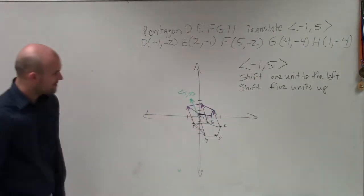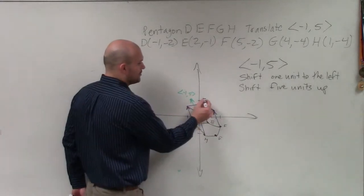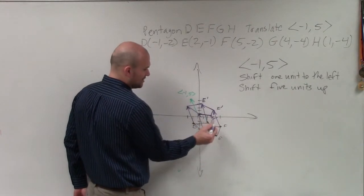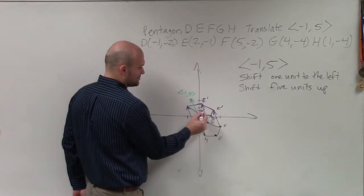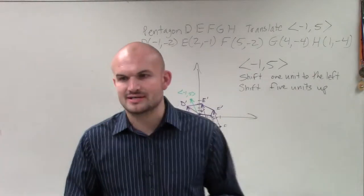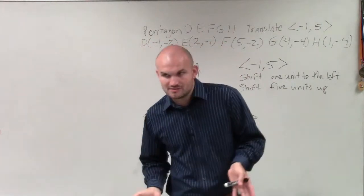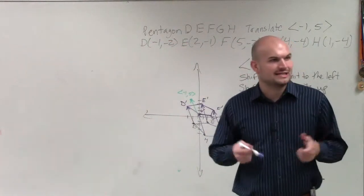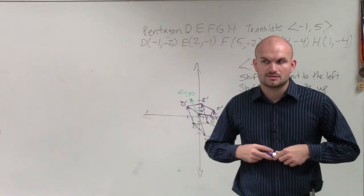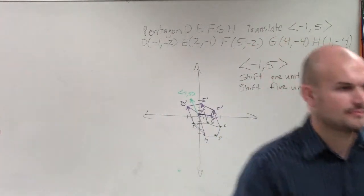You guys can see my purple has now taken this and I've shifted it up. So now we just go and label our points: E prime, F prime, G prime, H prime, and D prime. So again, what I'll remind you guys is what I did is I took the transformation vector and applied it to each and every one of my points. Does that make sense? Any questions? Good.